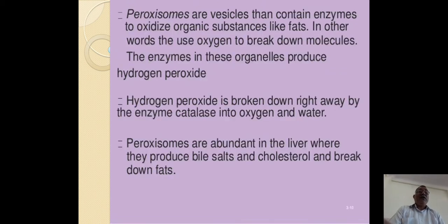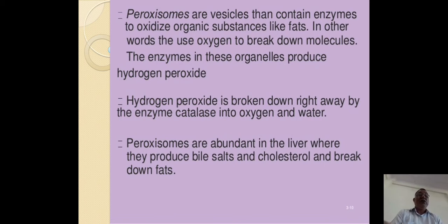Paroxysomes are vesicles that contain enzymes to oxidize organic substances like fats. In other words, they use oxygen to break down molecules. The enzymes in these organelles produce hydrogen peroxide. Hydrogen peroxide is broken down right away by the enzyme catalase into oxygen and water. Paroxysomes are abundant in the liver where they produce bile salts and cholesterol and break down fats.